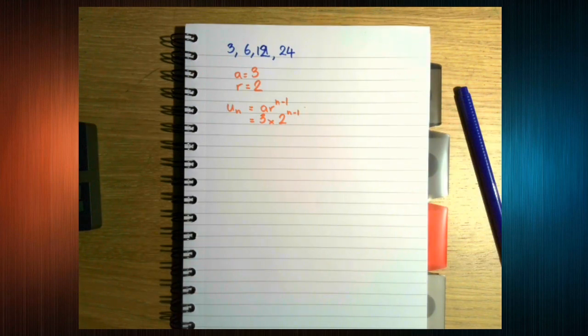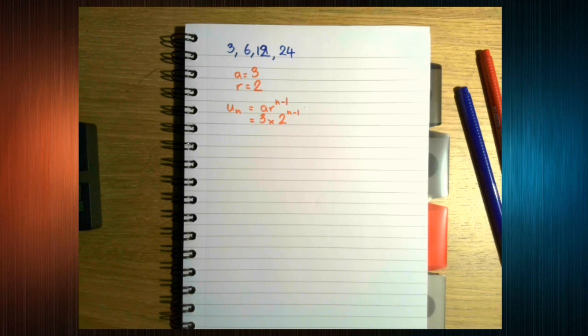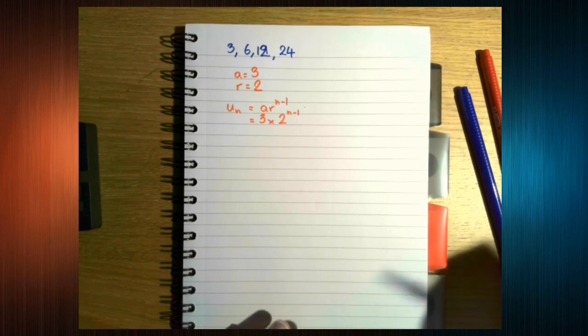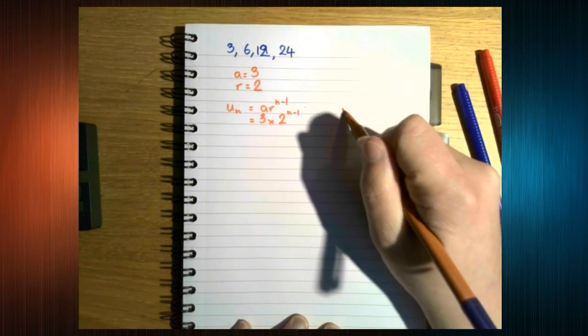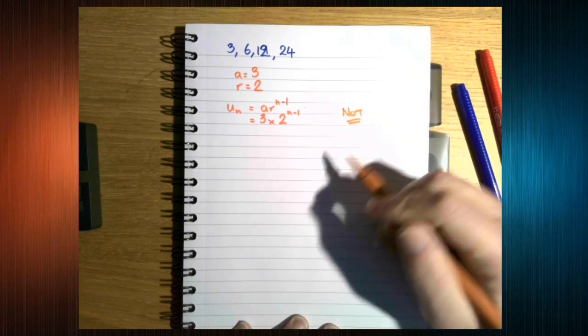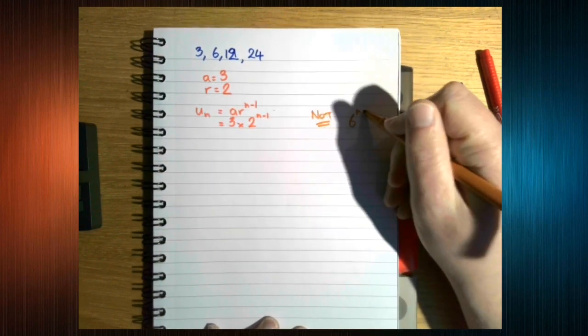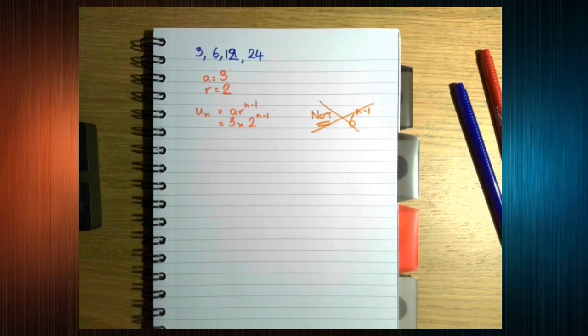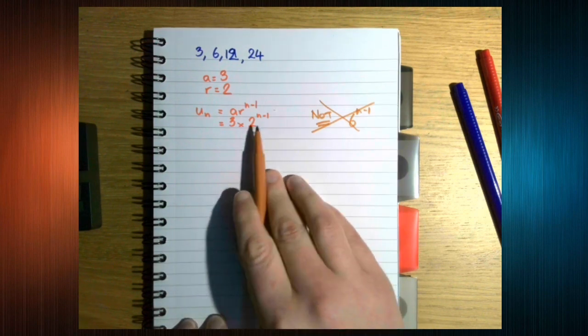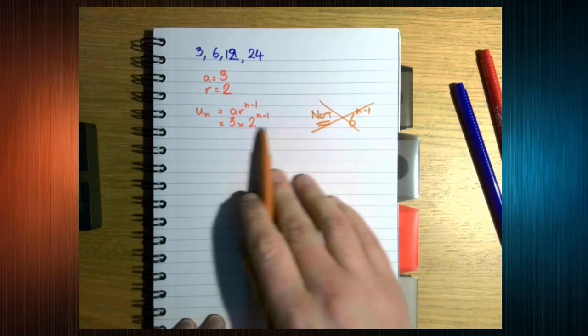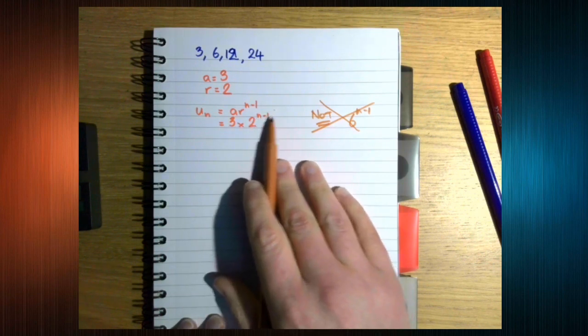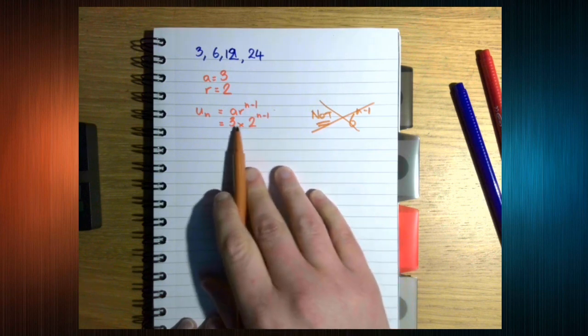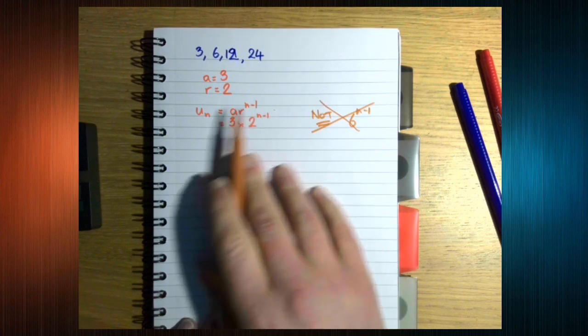Now careful. Because I know some students still struggle with laws of indices. This is not 6 to the n minus 1. Do not do this. It's 3 times 2 to the n minus 1. Remember your laws of your BODMAS or BIDMAS. Powers, indices, order before multiplication. 2 to the n minus 1, then times by 3.